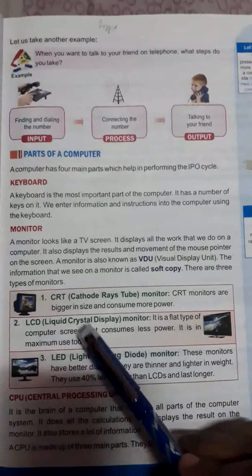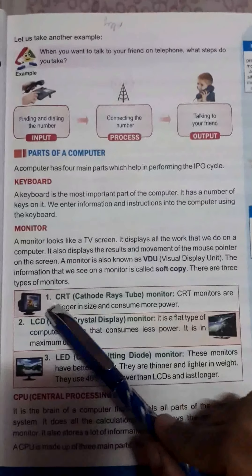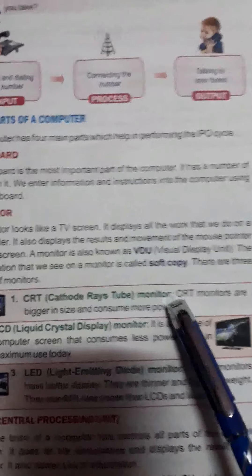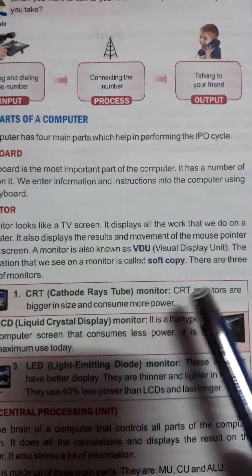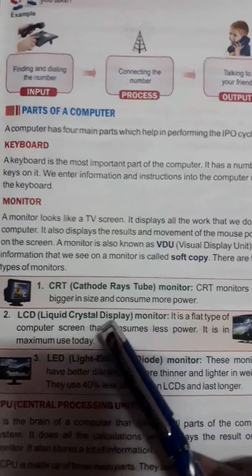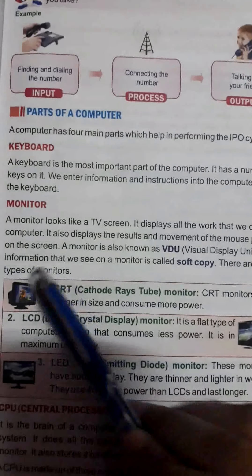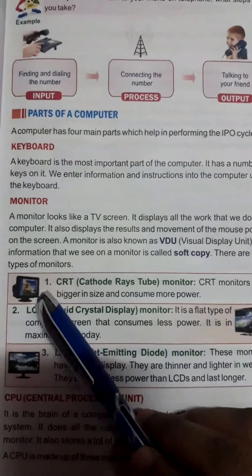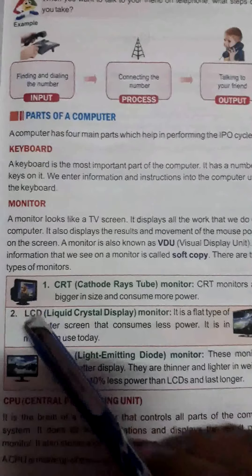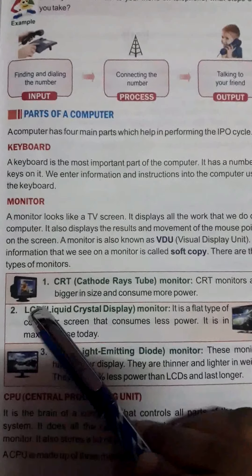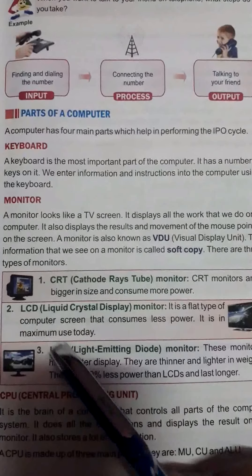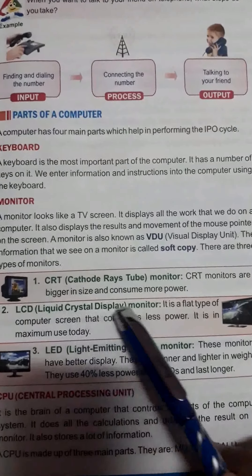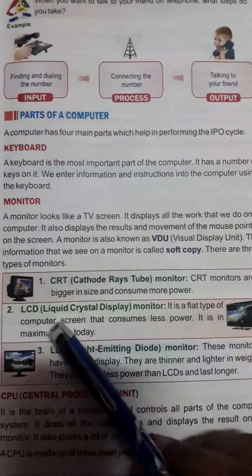Children, there are three types of monitors, as you can see in this picture. The first type is the CRT — Cathode Ray Tube monitor. It is very big in size and consumes more power; it uses a lot of electricity. This type is not commonly used nowadays.